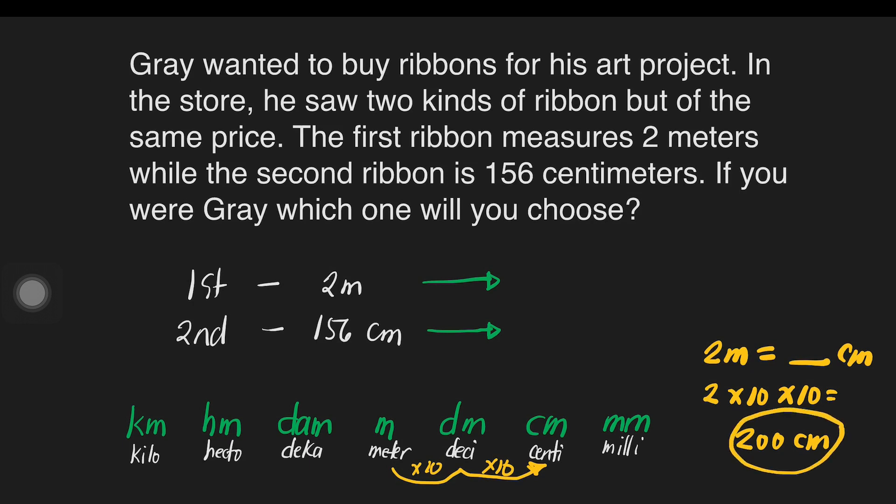But we have a shortcut. We don't need to multiply anymore that long. Instead, just move the decimal point 2 places to the right. We don't need to multiply 10 times 10 to get the answer. If the decimal point is not indicated, it is understood to be immediately to the right of the last digit in the given whole number. So, for this case, the decimal point is located at the right of the last digit.